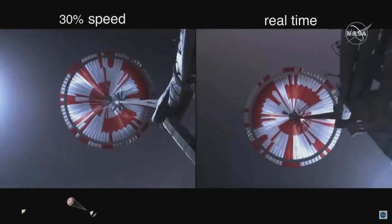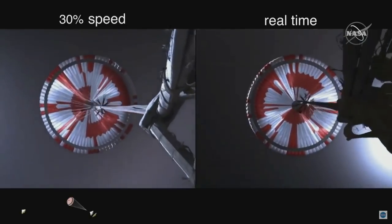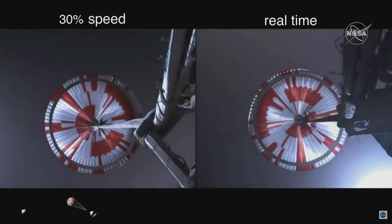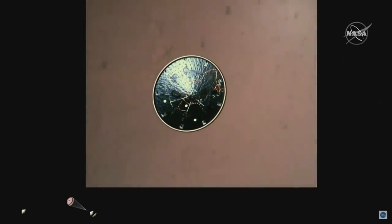Navigation has confirmed that the parachute has deployed and we are seeing significant deceleration in the velocity. Our current velocity is 480 meters per second at an altitude of about 12 kilometers from the surface of Mars. Heat shield set.